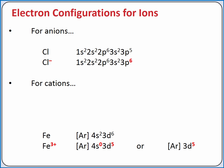When we write the electron configuration for an anion, we're adding extra electrons to the electron configuration of the neutral atom, because anions have additional electrons.